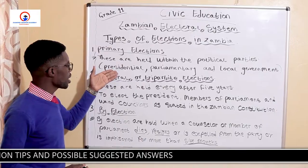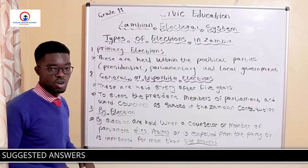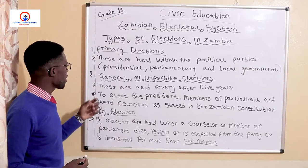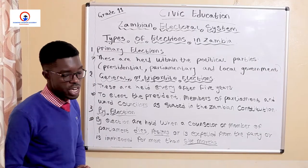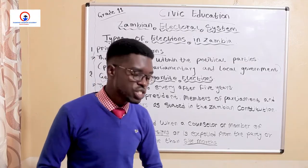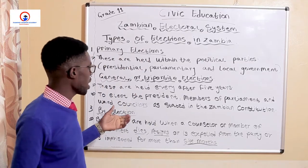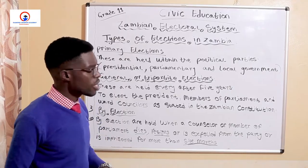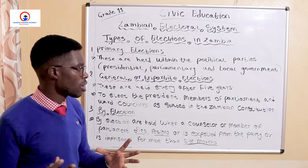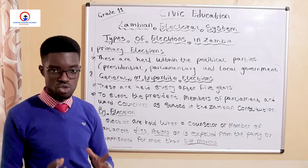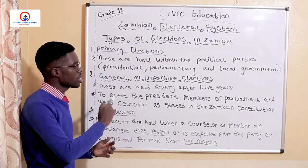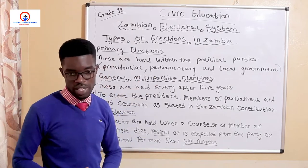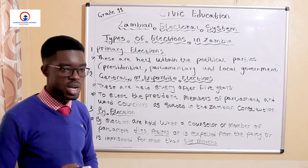If you've heard of the presidential convention, that is one example of the primary elections. Then we have what is known as the general or tripartite elections. General or tripartite elections are held every five years in Zambia. We refer to them as tripartite because they are held in three groups — the presidential, the parliamentarian, and the local government. Hence the word tripartite, taken from the word three.